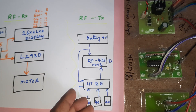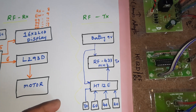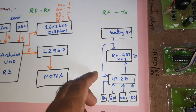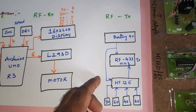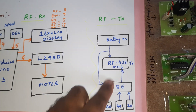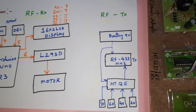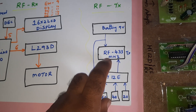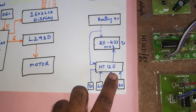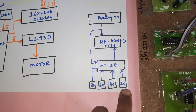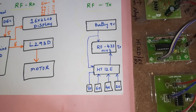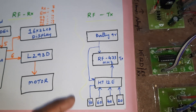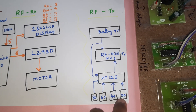The transmitter area represents different zones such as a school area, college area, hospital area, VIP area, or army area. These locations use a 9-volt battery and an RF 433 MHz transmitter module with HT12E encoder IC, transmitting speed limits of 20, 40, and 60.